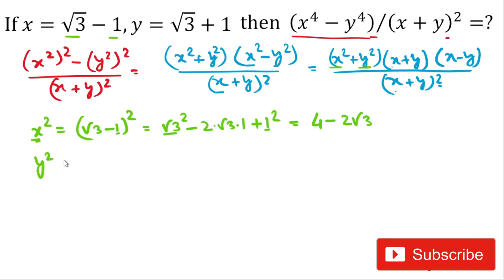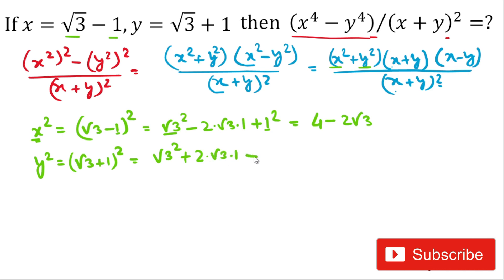Similarly, y² — the value of y is √3+1. Using (a+b)² = a²+2ab+b²: (√3)² plus 2 times √3 times 1 plus 1² gives 3 plus 2√3 plus 1, which equals 4 plus 2√3. So y² = 4+2√3.